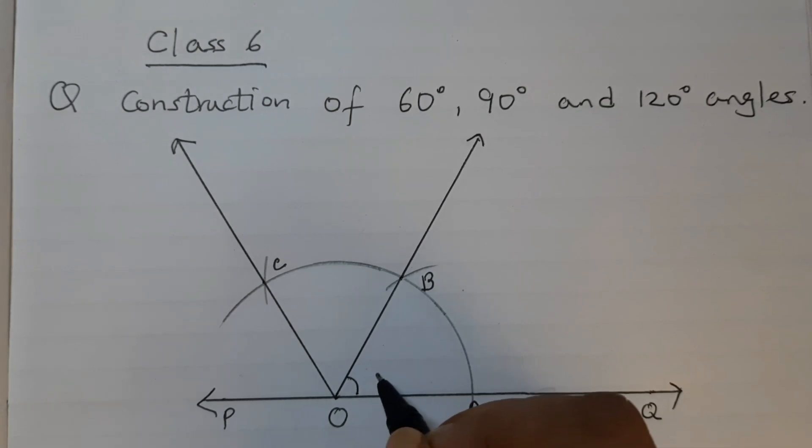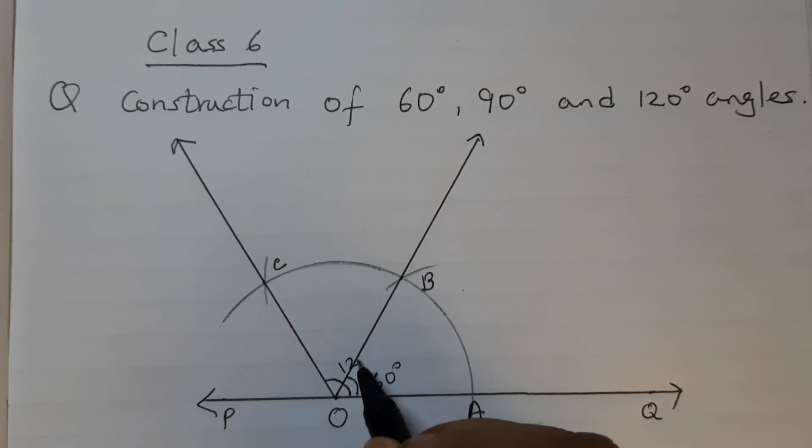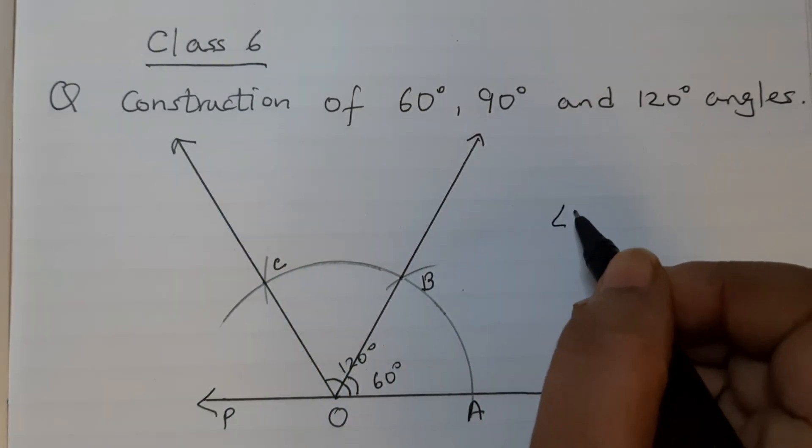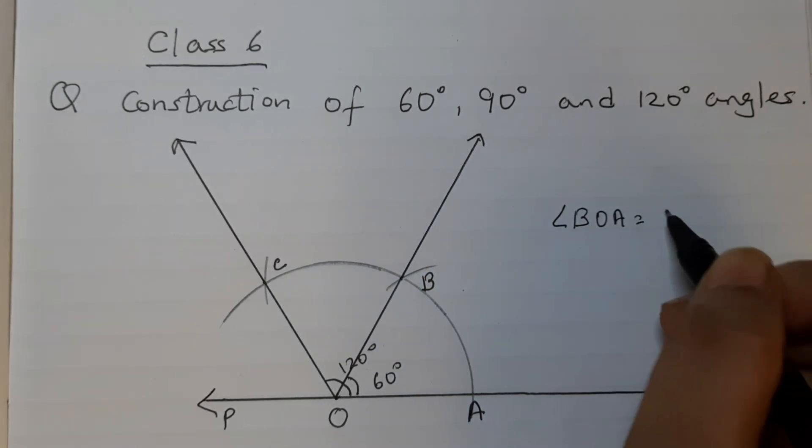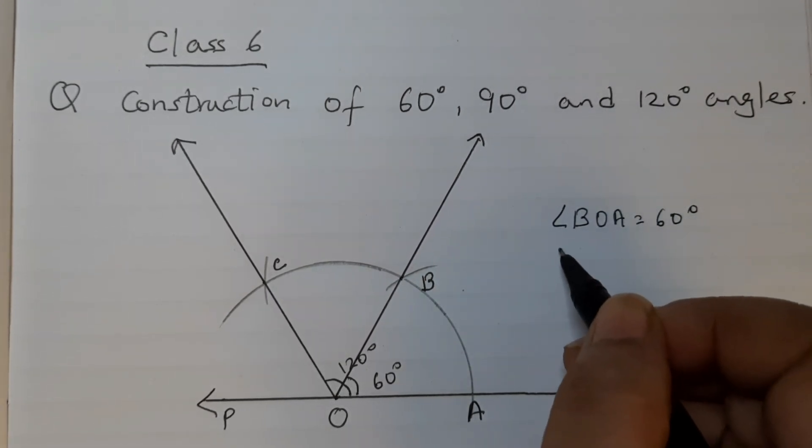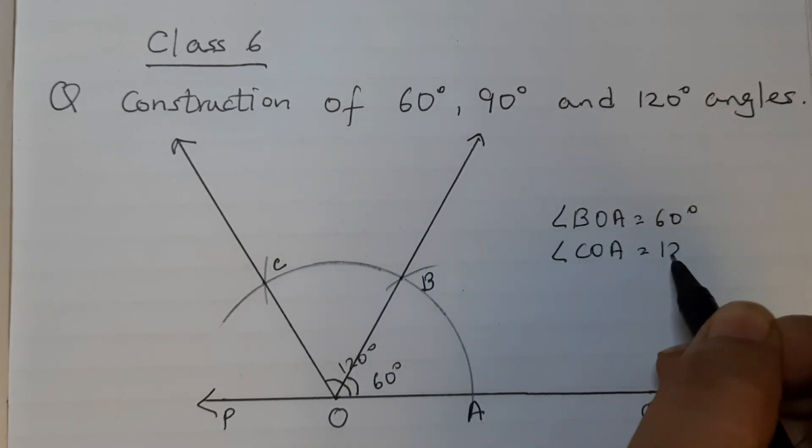This is 60 degrees angle and this is 120 degrees. Angle BOA is 60 degrees. Angle COA is 120 degrees.